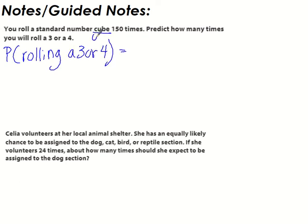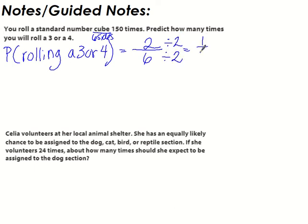On a cube there are six sides, so that's the total — the bottom is always the total. On a cube there's one 3 and one 4, so that's a total of two possibilities: 2 over 6. We always reduce, so we divide by 2 and get 1/3.